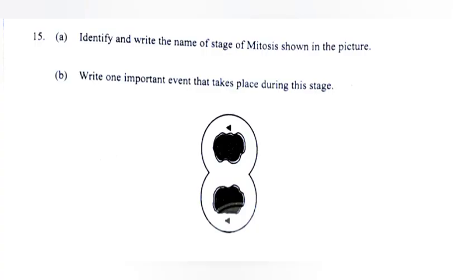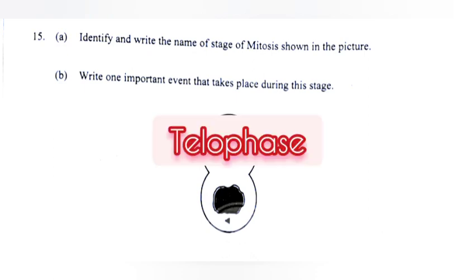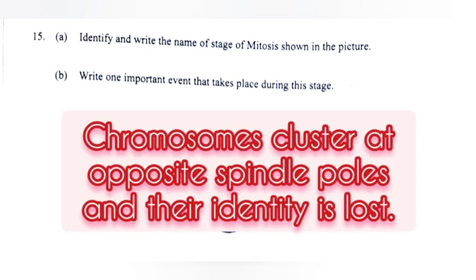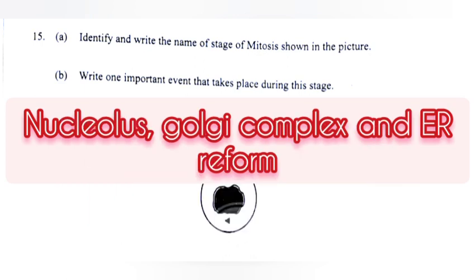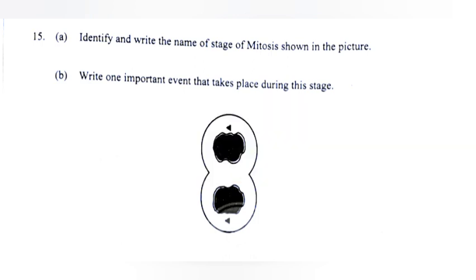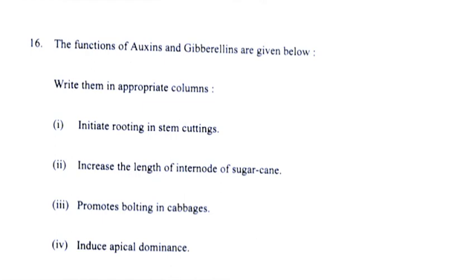A) Identify and write the name of the stage of mitosis shown in this picture. Answer: telophase. B) Write one important event that takes place during this stage. Answer: chromosomes cluster at opposite spindle poles and their identity is lost; nucleolus, Golgi complex and ER reform; nuclear envelope develops around the two daughter nuclei. Write any one.